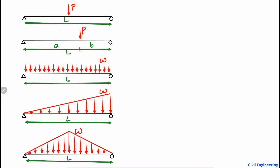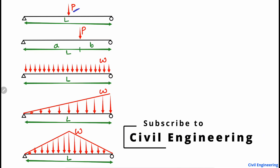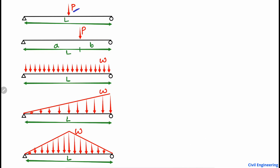We start first with a simply supported beam with only a point load acting on the beam. The point load or concentrated load P is acting in the middle of the beam, and L is the total length of the beam — L/2 on each side. The maximum deflection occurs at the midpoint under the load, and equals PL³ divided by 48EI.